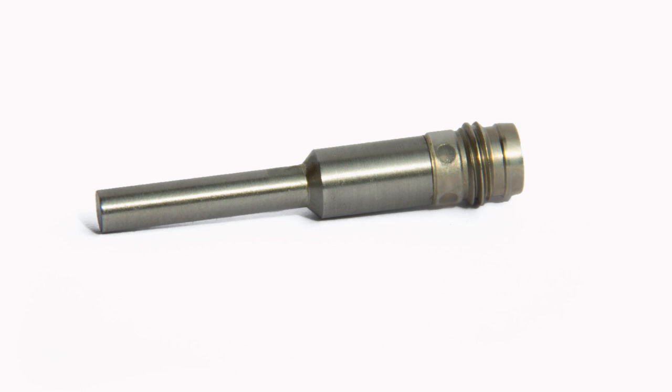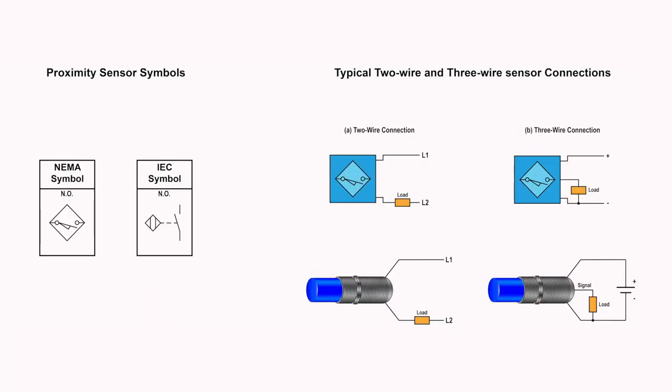The majority of proxies come with an LED status indicator to verify the output switching condition. Most of these sensors operate at either 24 VDC or 120 VAC. This is a typical two-wire and three-wire sensor connection.